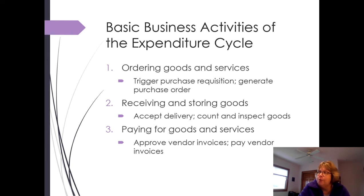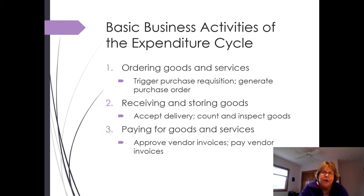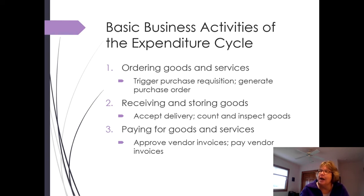There are actually three basic activities in some textbooks. The first thing is ordering goods — we send out a purchase requisition order to a vendor to try to order goods. We receive those goods or services, and then of course we pay for them. Sometimes paying for goods is broken out into two steps: approval of the invoices and then paying.